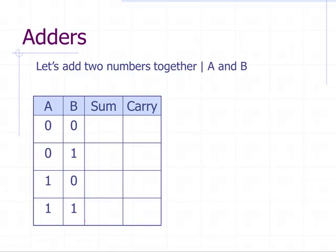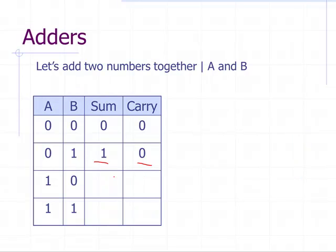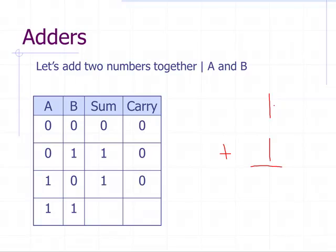Now let's talk about adders — adding two numbers together. Zero plus zero equals zero with no carry, so sum is zero and carry is zero. Zero plus one gives a sum of one and a zero carry. One plus zero gives the same: sum of one and zero carry. One plus one gives a zero for the sum and we carry the one, so sum bit is zero and carry is one.